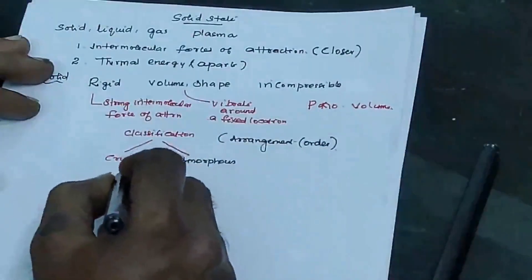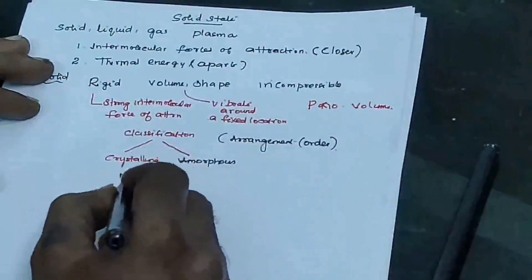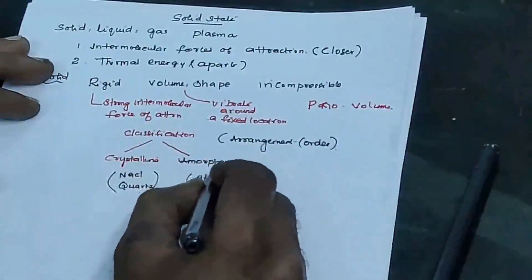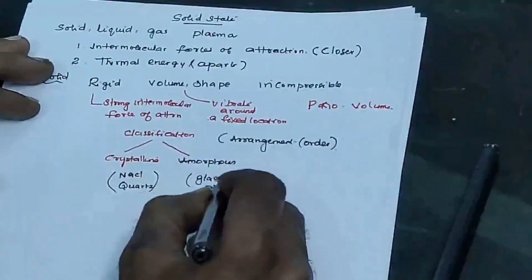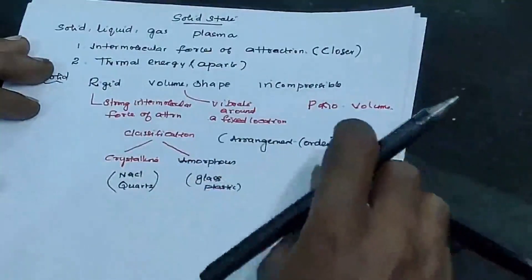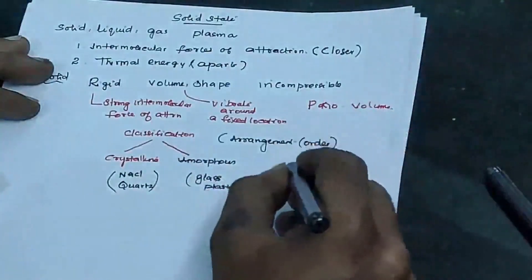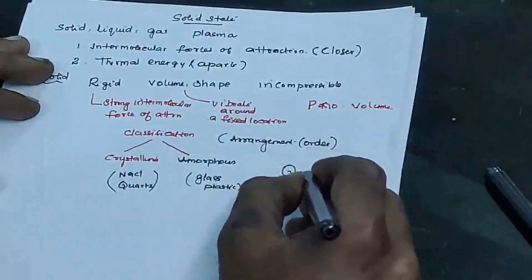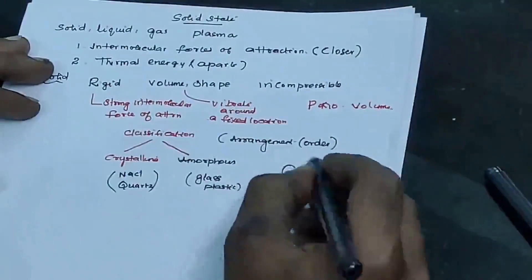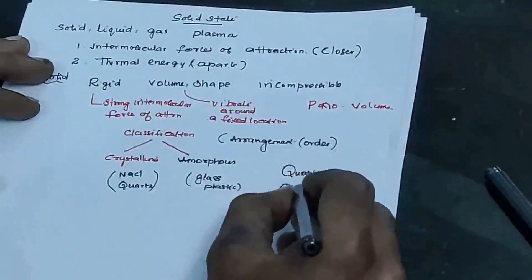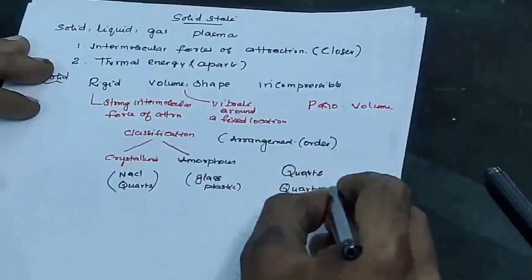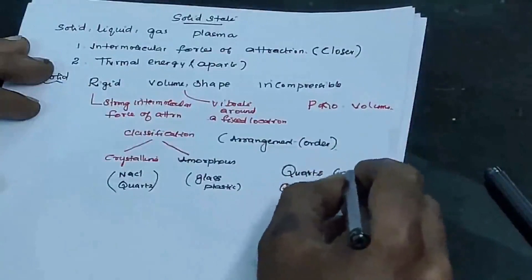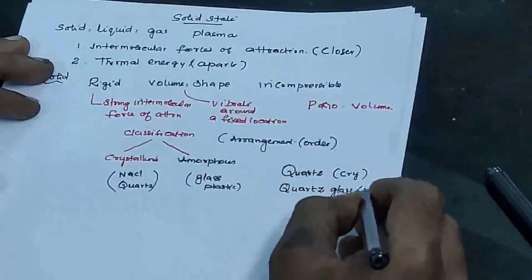Common examples of crystalline solids are sodium chloride and quartz. Amorphous solids include glass, plastic, rubber, etc. One important question here is whether quartz or quartz glass is amorphous or crystalline. Quartz is crystalline, but quartz glass is amorphous.